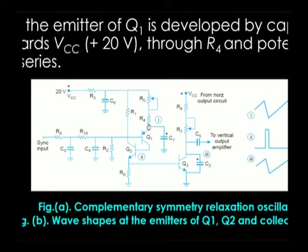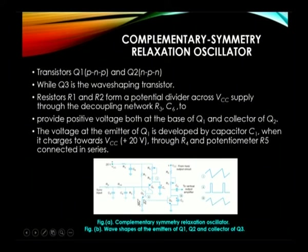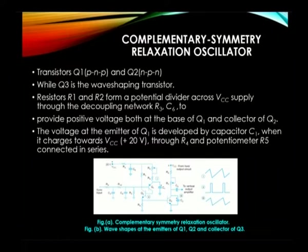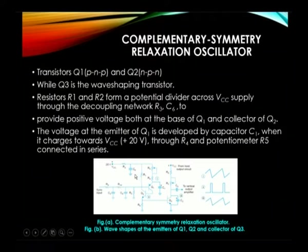A potential divider is connected to Q1, and C1 holds a voltage of 20 volts, which will discharge and charge during the conduction of Q1. Q3 acts as a wave shaping transistor. Resistors R1 and R2 form a potential divider connected across VCC through the decoupling network R3 and R6. R1 and R2 are connected across the supply voltage with the help of R3 and RC6, called the decoupling network. This provides a positive voltage at both the base of Q1 and the collector of Q2. The voltage at the emitter of Q1 is developed by capacitor C1.